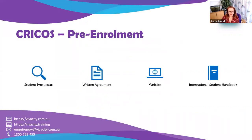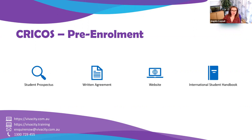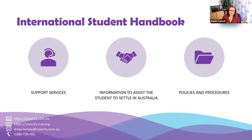For CRICOS, your pre-enrolment information is your student prospectus, which includes all the requirements against the CRICOS standards and ensures the student is informed of the enrolment process. You also have a written agreement with the terms and conditions of enrolment that the student must understand and agree to, including health requirements, health insurance, accommodation, and additional fees. Your website must be kept up to date, and the International Student Handbook has different requirements within policies and procedures that align with the CRICOS requirements, including support services and information to assist the student with settling into Australia.